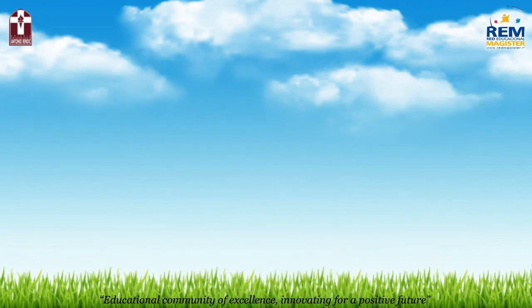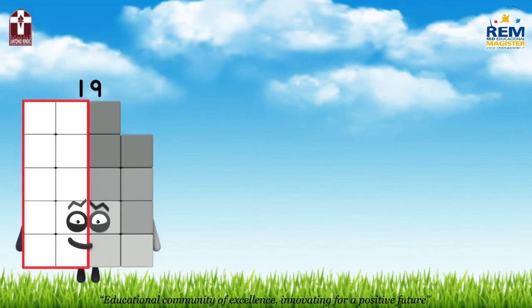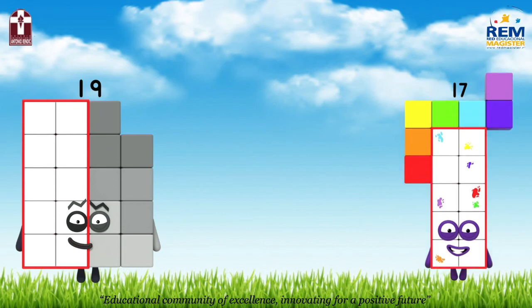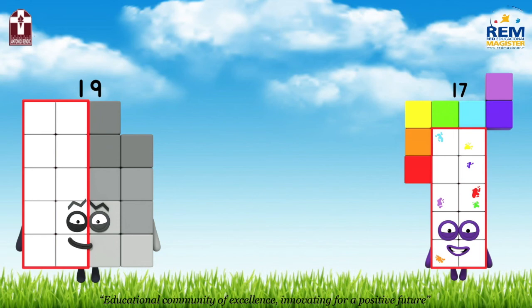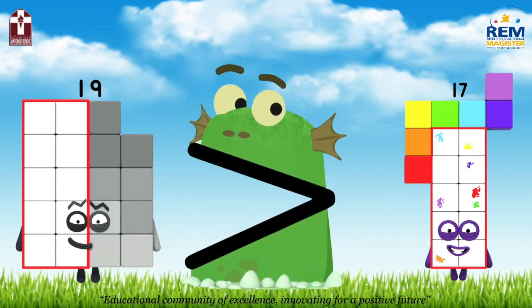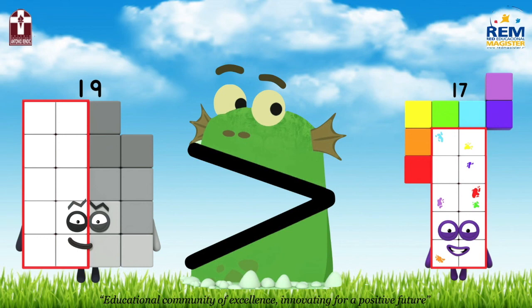Look at here now. This is the number nineteen, and this is the number seventeen. Let's compare now — is nineteen greater than seventeen? Is nineteen less than seventeen? Or is nineteen equal to seventeen? Perfect! Nineteen is greater than seventeen.